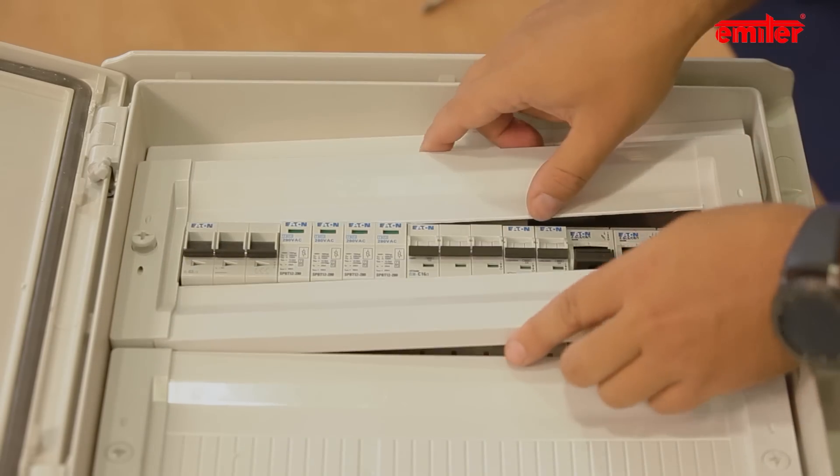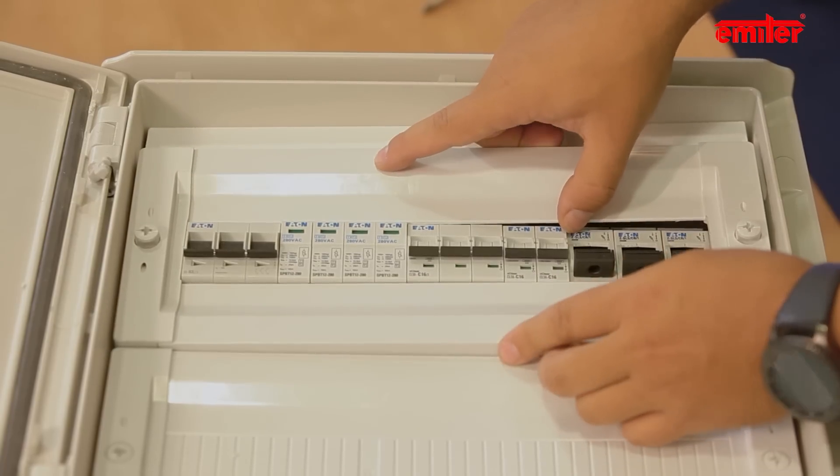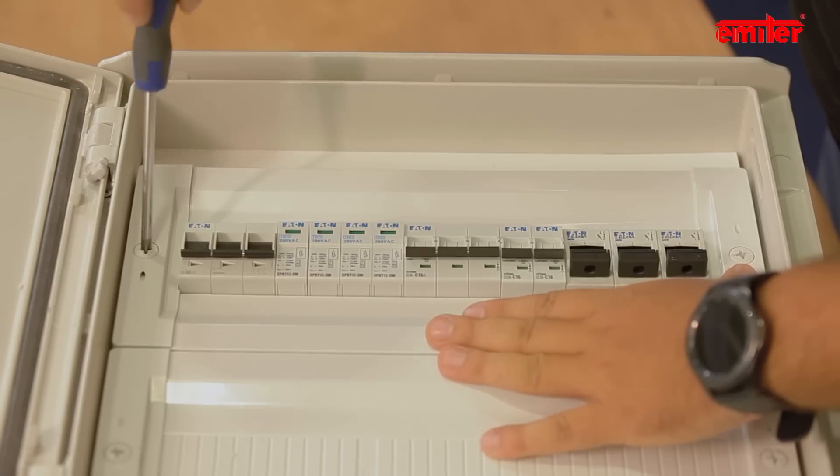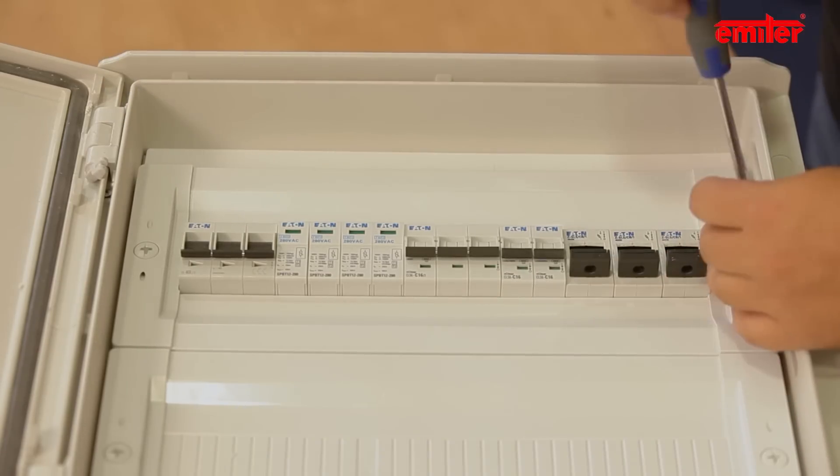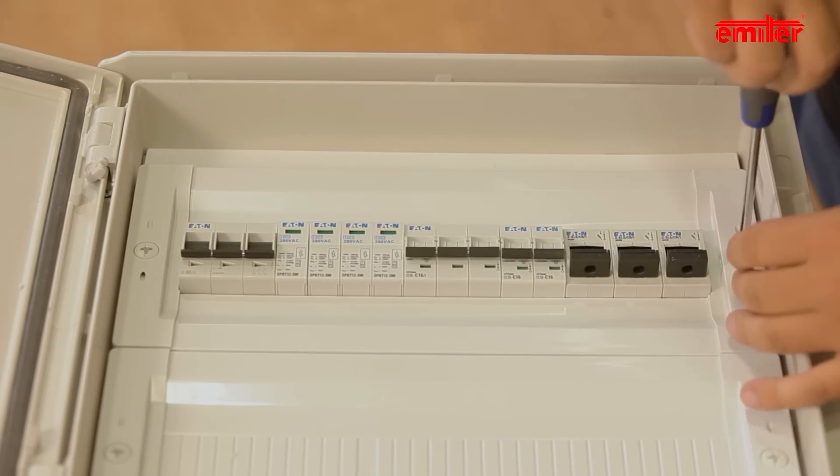We cut holes for the apparatus in the covers. We put the covers on and lock them by turning blockades by 90 degrees. Ready.